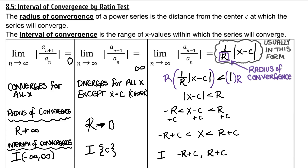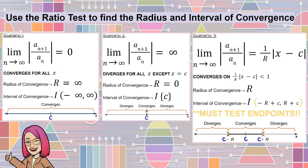Equal to 1 doesn't mean it's divergent — equal to 1 just means inconclusive. So the thing about our interval is we don't actually know if the inequality symbols should be strictly less than, or if one or both of them should be less than or equal to. That tends to be the most tedious part of the ratio test for interval of convergence, because you will need to determine if the endpoints cause the series to converge or diverge. You will need to check each endpoint separately.